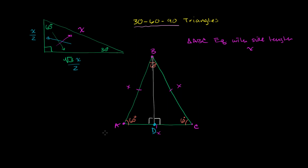Let's call this point D right over here. Triangles ABD and BDC clearly both share side BD. This angle right over here is congruent to this angle over there, and this angle is congruent to this angle over here. So if two pairs of angles are congruent, the third angles must be congruent to each other as well. We can use side-angle-side or side-side-side congruence to show that triangle ABD is congruent to triangle CBD.